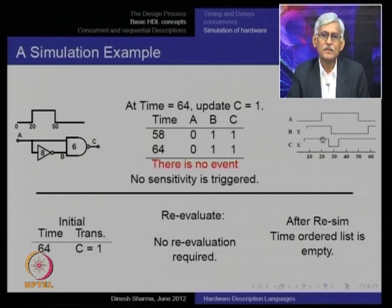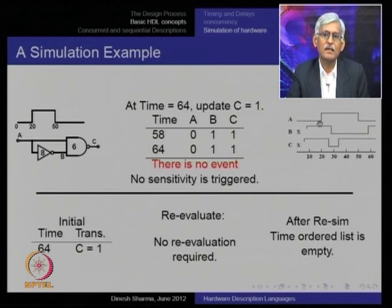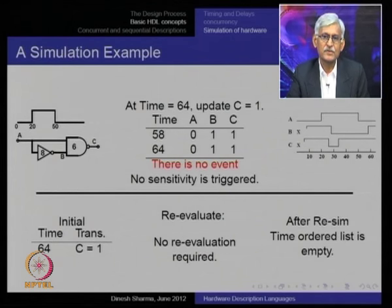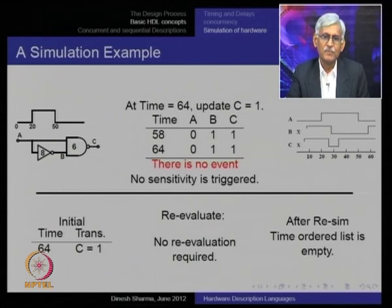We have correctly simulated the glitch which appears in C at the rising edge of A. At the falling edge of B, nothing happens to C. This is indeed what you would expect in real hardware, and our system of update, re-simulate, and place transactions has successfully re-created this scenario in simulation, showing how we proceed in our simulations.